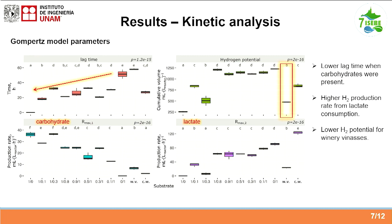When we look at the real effluents, we observe that the fermentation with winery vinasses gives a lower hydrogen potential compared with, for example, cheese whey and the experiments with the synthetic substrates.